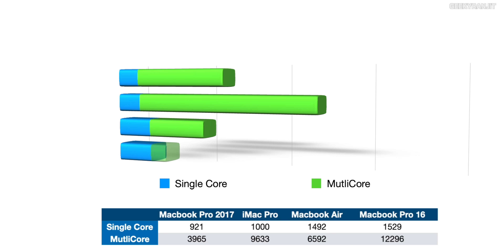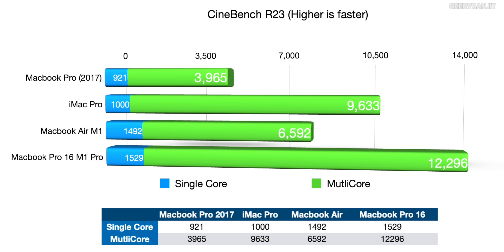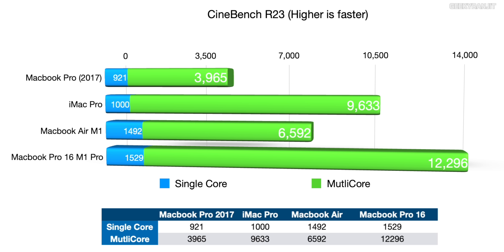I ran a bunch of benchmarks so you can have an idea about these computers. Let's start with the Cinebench R23 — you guys can also download this software and run it on your computers, Windows as well as Mac, to get an idea of your laptop's performance. As you can see from the chart, the top bar graph is for the oldest — that is the MacBook Pro 2017 — then the iMac Pro, then the MacBook Air. In Cinebench R23, the higher the score the better, and this specifically tests CPU performance. The older MacBook Pro 2017, as expected, did not perform well at all — in single core it got a score of just 921, and in multi-core it was 3,965.